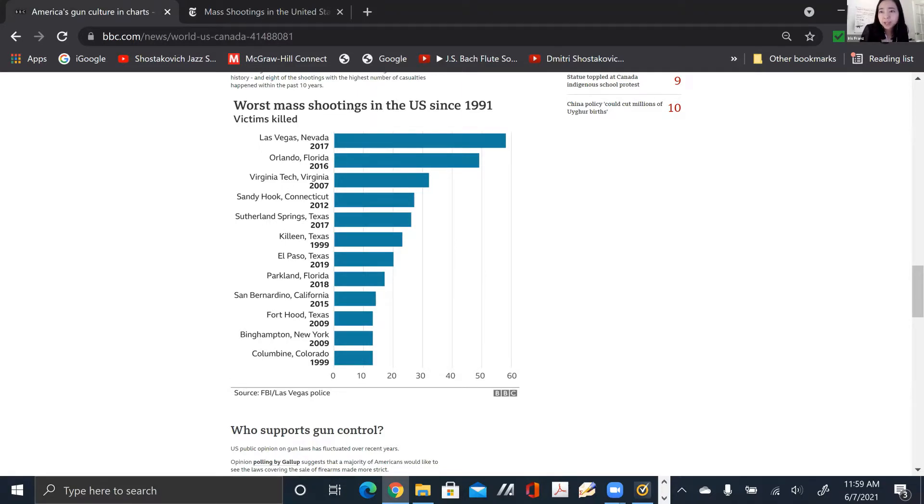Now, just to give you an idea about the negative externality of guns and AR-15, this is the mass shooting in the U.S. since 1991. These are the worst ones. You can see the number of deaths here. This credit goes to BBC News.